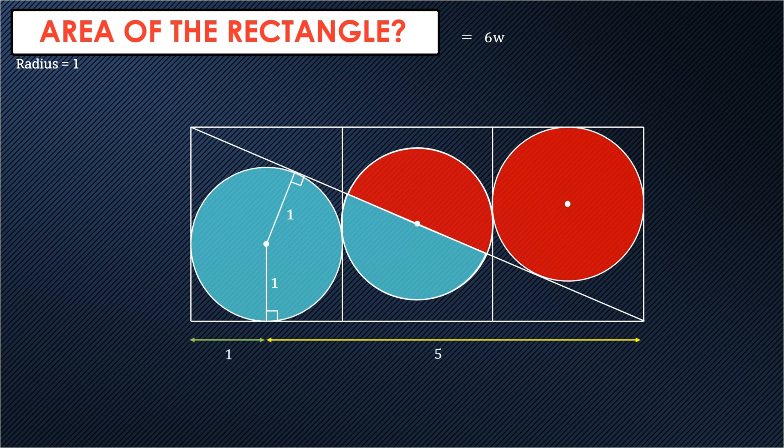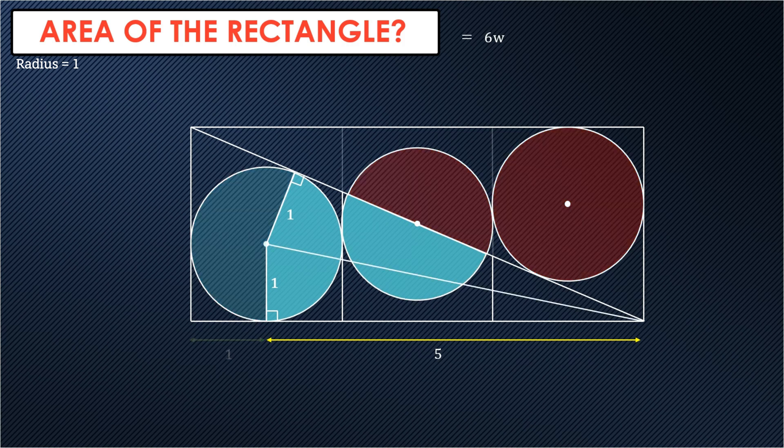So from the center of the circle, we can extend a line to the bottom right vertex of the rectangle. This gives us two right triangles. Because these triangles are both right angles and share the same hypotenuse and another side, that means that they are congruent.